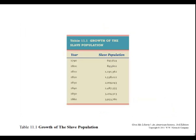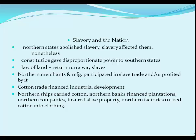The growth of the slave population: in 1790 there were 697,000 slaves, and by 1860 almost 4 million men, women, and children in servitude. Although the northern states had abolished slavery, slavery did affect them. The Constitution gave disproportionate power to the southern states in both the House of Representatives and the Electoral College, and it required all states to return any fugitive slaves. You could say slavery touched the lives of all Americans.